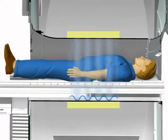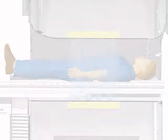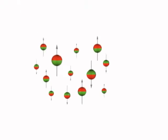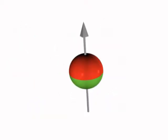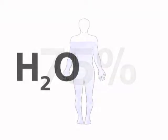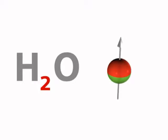MRI uses a magnetic field to orient the position of certain nuclei in the body. The primary nuclei used for MRI imaging is in the hydrogen atom, called a proton. As you know, the body is made up of approximately 75% water. Water is two parts hydrogen, making the nucleus of the hydrogen atom — the proton — the most abundant in the human body.